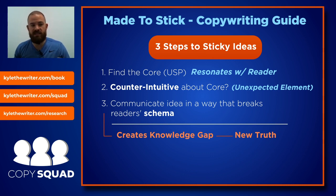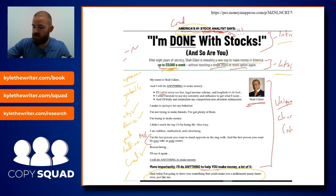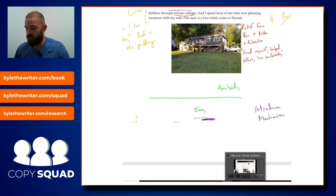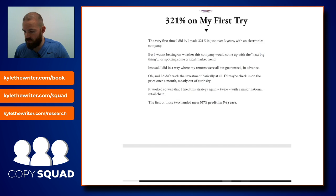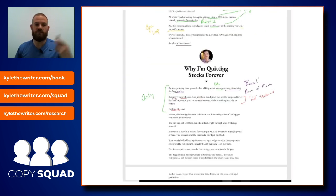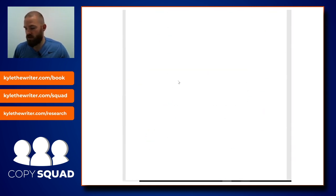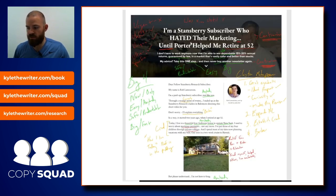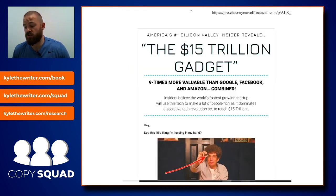Then you communicate that idea — which they did in the headline — in a way that breaks the schema. And whenever you do that, you've got their attention. If you scroll down this promo, 'why am I quitting stocks forever' is right there in the body copy. All this stuff is that unexpected element. This one's actually about bonds, not options trading. But again, they use the same thing — if I'm not trading stocks, I can say I'm done with stocks forever, which is unexpected.